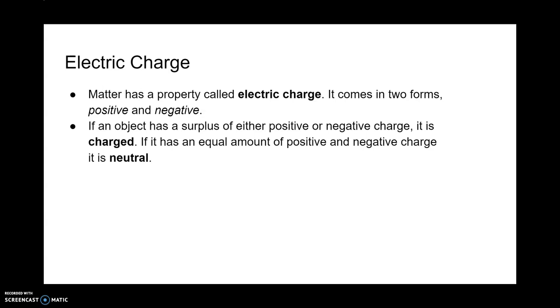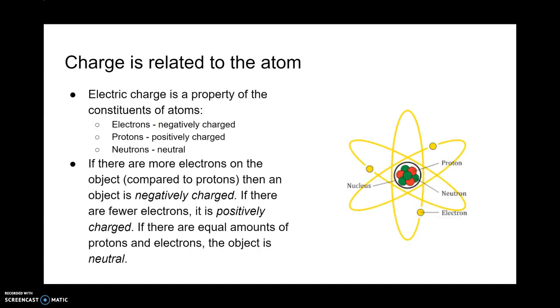Charge is related to the atom. Charge fundamentally comes from the sub parts of an atom. Atoms are made up of protons, neutrons, and electrons. Protons and neutrons make up the nucleus where electrons orbit. We've got electrons which are negatively charged and protons that are positively charged, where neutrons are neutral.